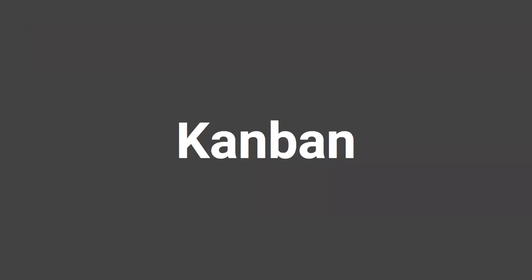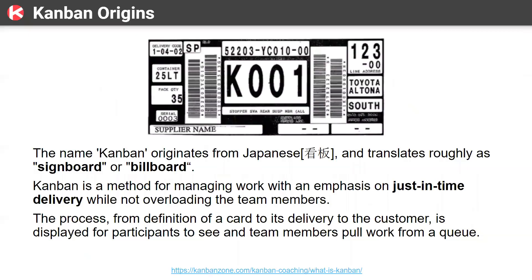First, let's make sure we understand Kanban. This is a Kanban card from a company called Toyota, and it captures a lot of information. When you look at this card, you see a lot of information, but there's even more behind those barcodes. They use a laser gun to read those codes and get even more information. A Kanban is actually a card — translated as a signboard or billboard — that contains everything you need to know about something visually on a card.